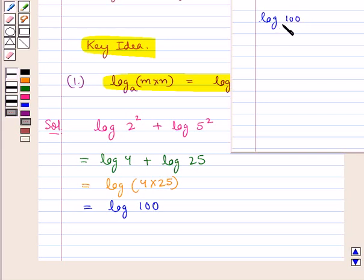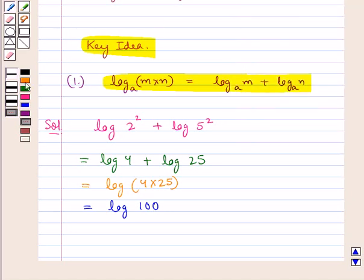Now, we know that log of 100 to the base 10, since the base is not indicated, this means that the base is 10 is equal to 2. Therefore, log of 100 is equal to 2.